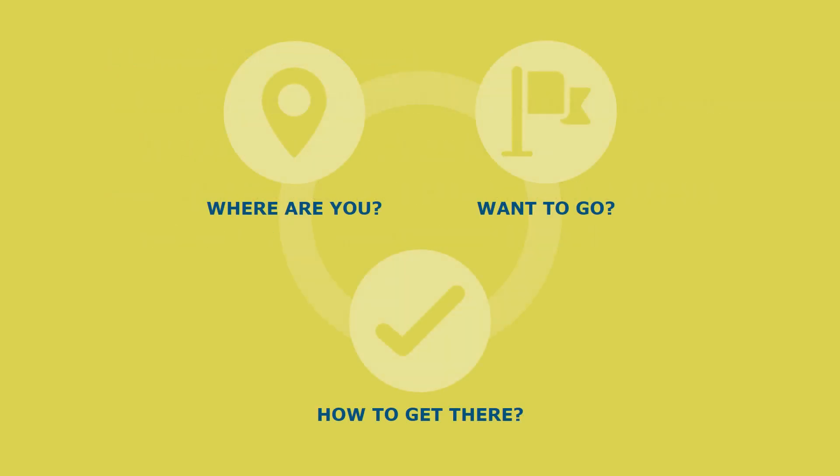Human resource planning is critical for each functional area of human resource management. Ask these three simple strategic questions: where are we now, where do we want to be, and how do we get there — to frame your next human resource planning process. Doing so will ensure that you develop the right human resource strategy, goals, and action items to realize your plan.